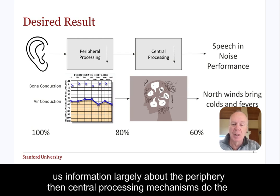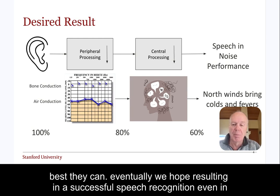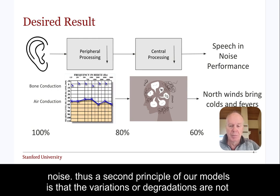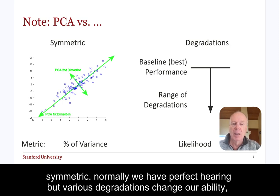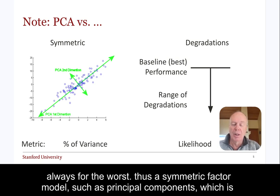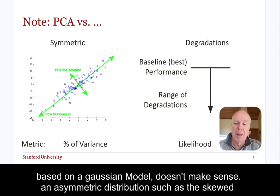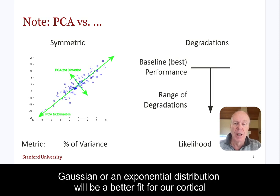The audiometric tests give us information largely about the periphery, then central processing mechanisms do the best they can, eventually resulting in successful speech recognition, even in noise. A second principle of our models is that the variations or degradations are not symmetric. Normally we have perfect hearing, but various degradations change our ability, always for the worst. Thus a symmetric factor model, such as principal components, which is based on a Gaussian model, doesn't make sense. An asymmetric distribution, such as the skewed Gaussian or an exponential distribution, will be a better fit for our cognitive models.